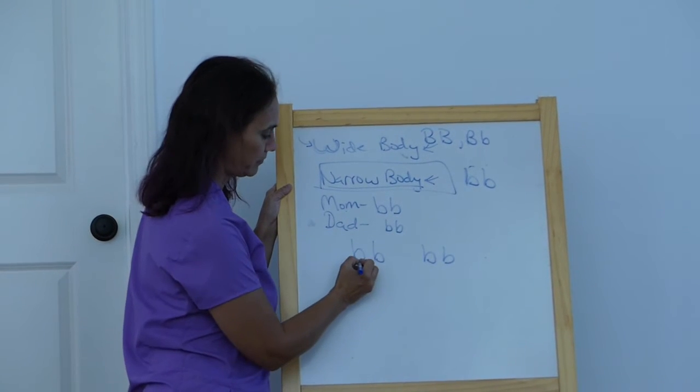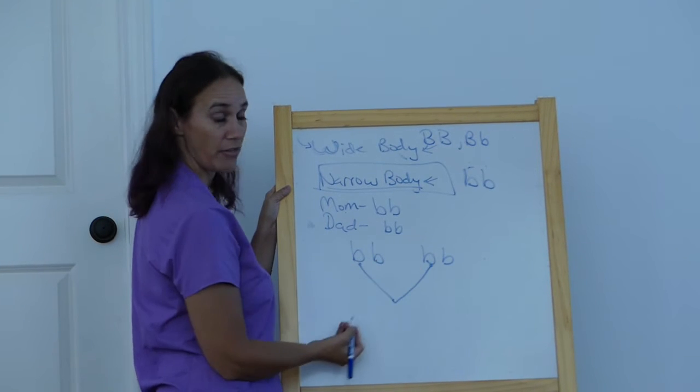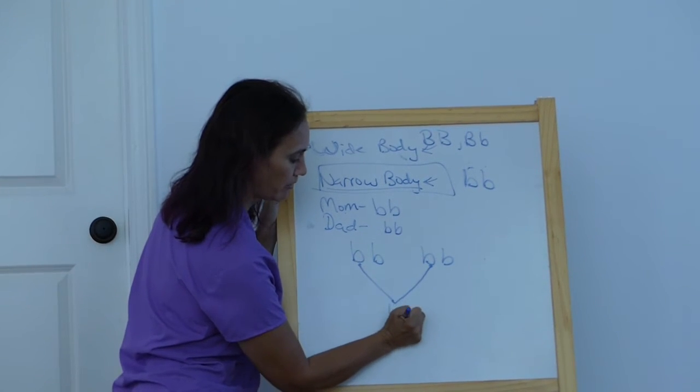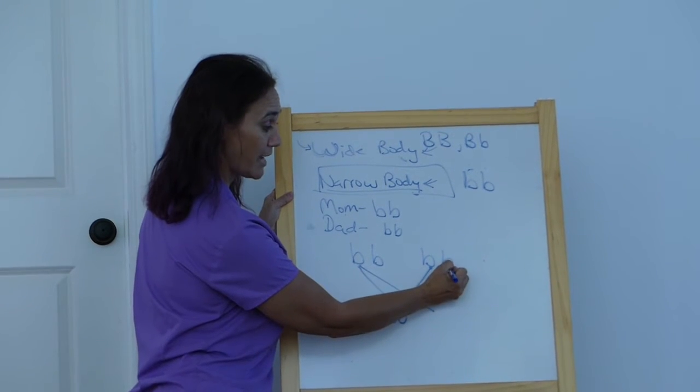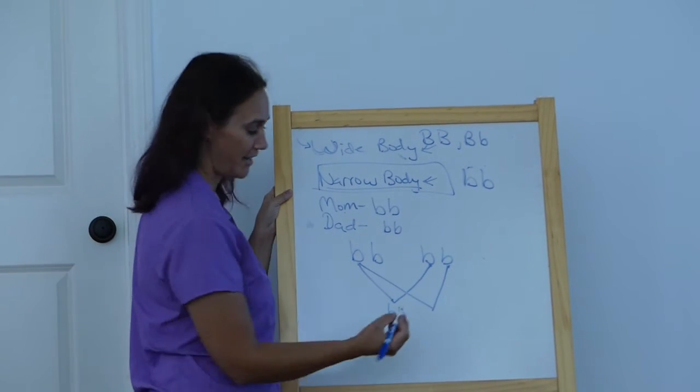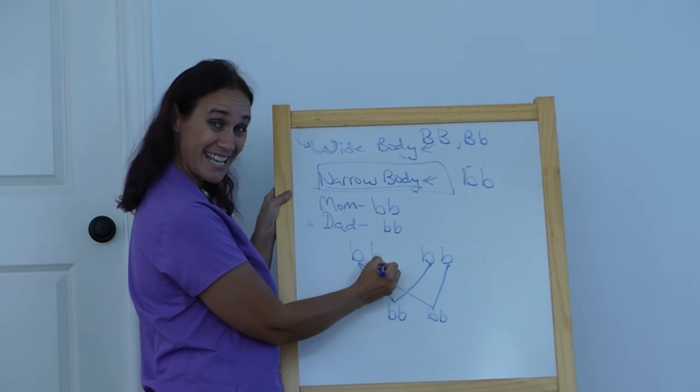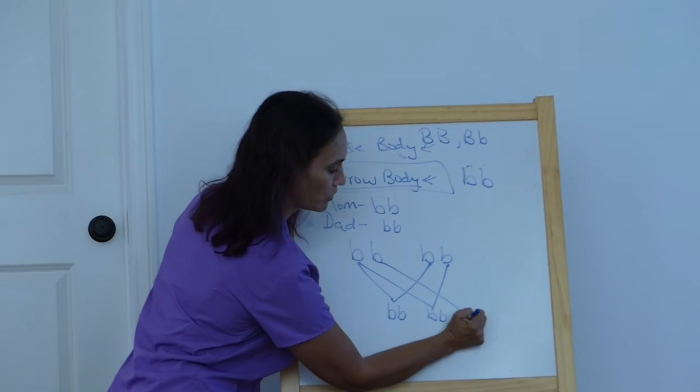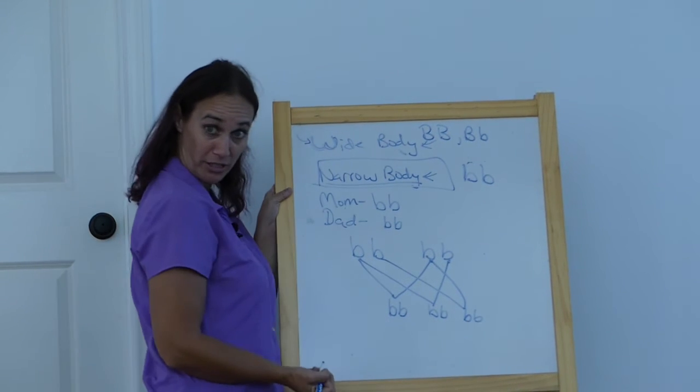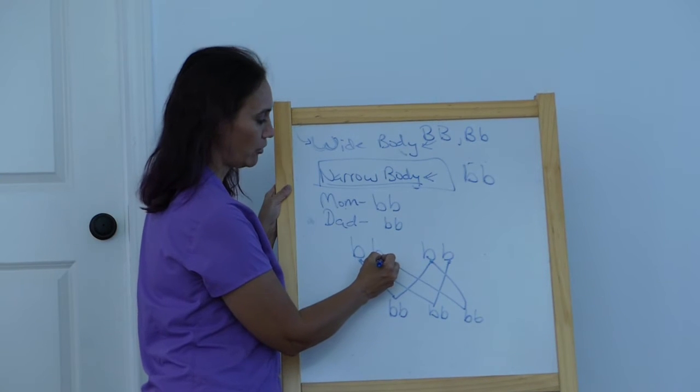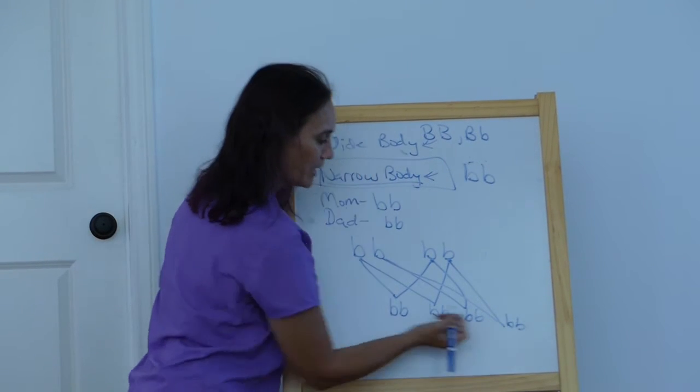Combination number one: this allele goes with this allele, and we get bb. Or this first one could go to dad's second b allele—again, we get bb. Or mom's second allele could combine with dad's first b and we'd get another bb. Or mom's second b allele could combine with dad's second b allele and we'd get bb.